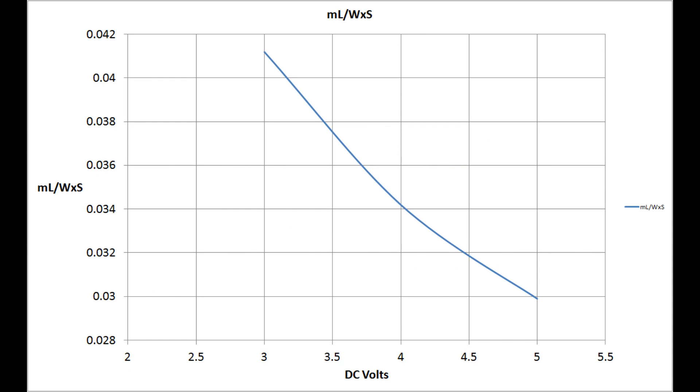This graph is just the detail of the production rate in terms of millilitres per watt second over the range of 3 volts to 5 volts. As I say, I couldn't get any significant readings at 2 volts whatsoever.